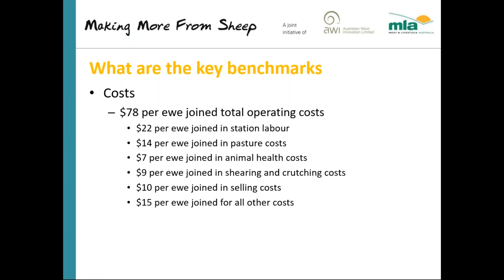Those subheadings are roughly where costs might be apportioned, but the important number is the total. If you can't remember $78, go home with $80. If you can keep your costs under $80 per ewe joined for the year including your own labour, you're on track to match the top 20% prime lamb producers. That cost of production is around $3.50 per kilogram dressed weight or lower.